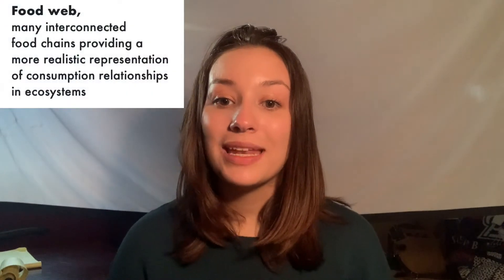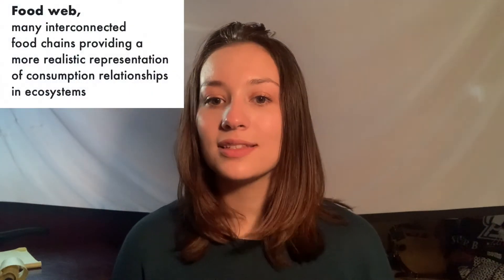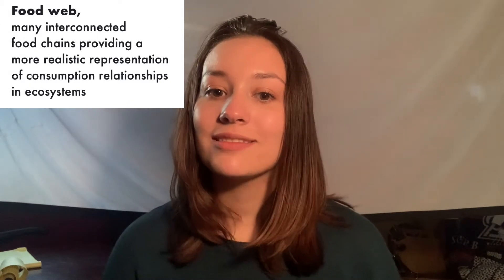So now that we have reviewed all of that and understand how all the different working parts come together, we can come up with a cohesive definition of what a food web is. Food webs consist of many interconnected food chains and are more realistic representations of consumption relationships in ecosystems. In order to understand why it's a better representation, let's look at a food web itself.